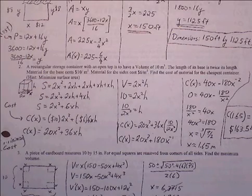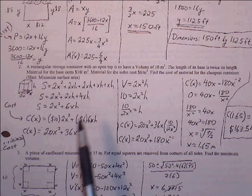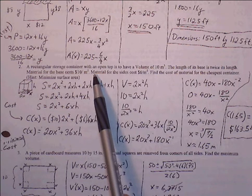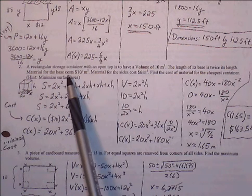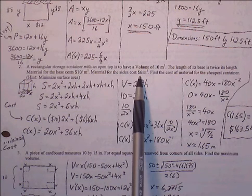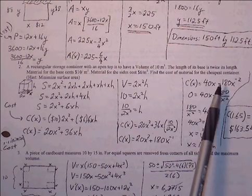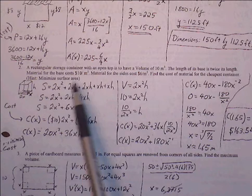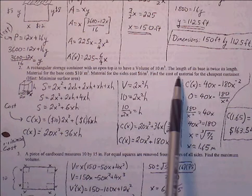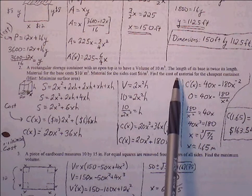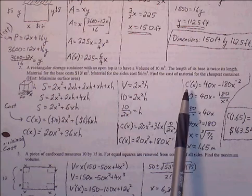Number two: a rectangular storage container with an open top is to have a volume of 10 cubic meters. The length of the base is twice its width. Material for the base costs $10 per square meter, and material for the sides costs $6 per square meter. We need to find the cost of material for the cheapest container — so we're trying to minimize cost, which is closely related to surface area.